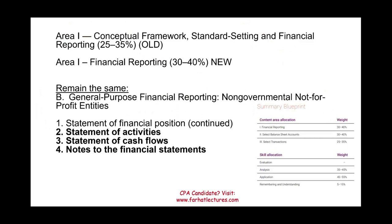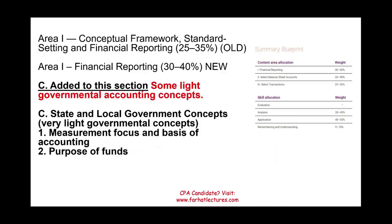Section B also remained the same — non-governmental, not-for-profit entities and general purpose financial reporting. You still need to know the statement of financial position, statement of activities, statement of cash flows, and notes. I wish they had moved this to BAR. They also added section C, which contains some light governmental accounting concepts — basic concepts, measurement focus, and basis of accounting. Basically they want you to know what modified accrual is and the purpose of funds, which seems redundant given that funds are also covered in BAR.